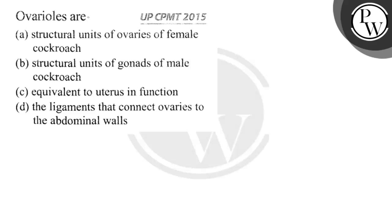Let's read the question. Ovarioles are: option A - structural units of ovaries of female cockroach; option B - structural units of gonads of male cockroach; option C - equivalent to uterus in function; option D - the ligaments that connect ovaries to abdominal walls.